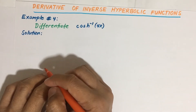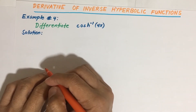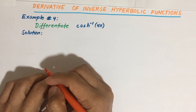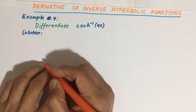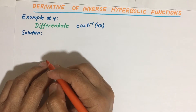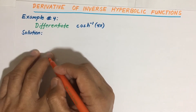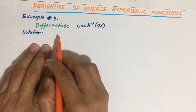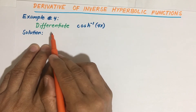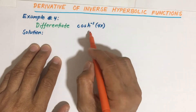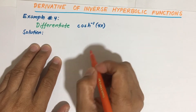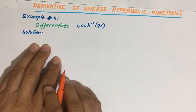Hello everyone, welcome once again to our discussion on the derivative of inverse hyperbolic functions. This time we are going to solve example number four: differentiate inverse hyperbolic cosine of 4x.